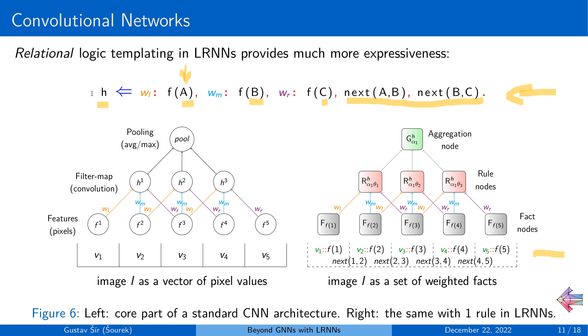Now this rule, when grounded over some sequential structure, such as 1, 2, 3, 4, 5 here, then directly corresponds to the computation induced via application of a standard convolutional filter in CNNs, where we have the input pixel values corresponding to the fact nodes, the rule nodes then represent the individual application of the convolutional filters, and finally we have the aggregation node capturing the pooling operation.